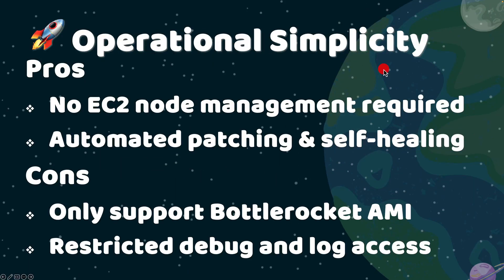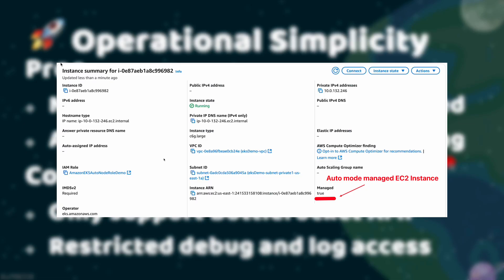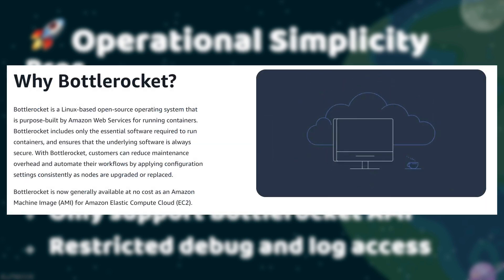EKS Auto Mode helps simplify your operations. With Auto Mode, you do not need to worry about managing nodes or scaling — it does all of that for you automatically. It's like having a 24/7 Kubernetes operations robot. When you use Auto Mode, AWS sets up and manages EC2 instances for you.